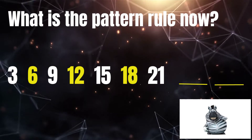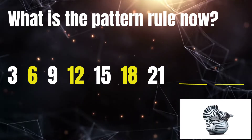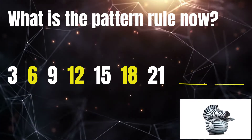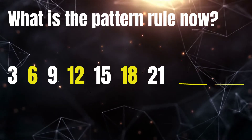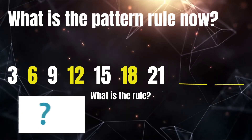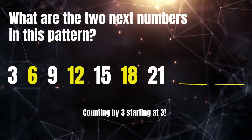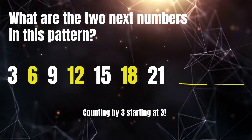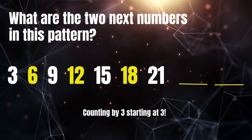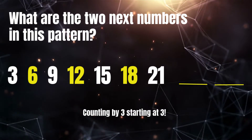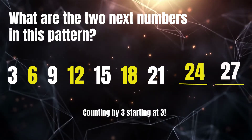What is the pattern rule now? Count with me. Three, six, nine, twelve, fifteen, eighteen, twenty-one. What's the pattern rule here? Counting by three, starting at three. Great work! What are the next two numbers in this pattern? Twenty-four, twenty-seven. Woohoo!